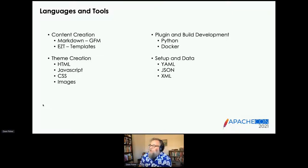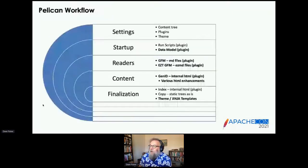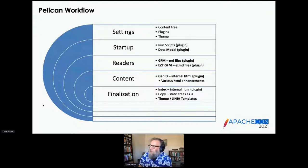For setup and data, we're using YAML, JSON, and XML. In Pelican, which is a completely open source project, you go through these phases. Their signal model is actually a little bit larger than this — there are a few more steps where you can inject plugins — but for our purposes they essentially boil down to the following.